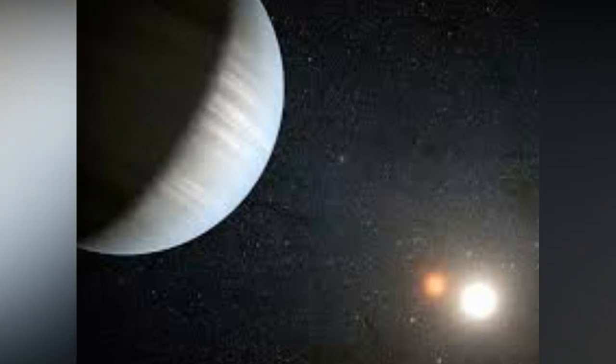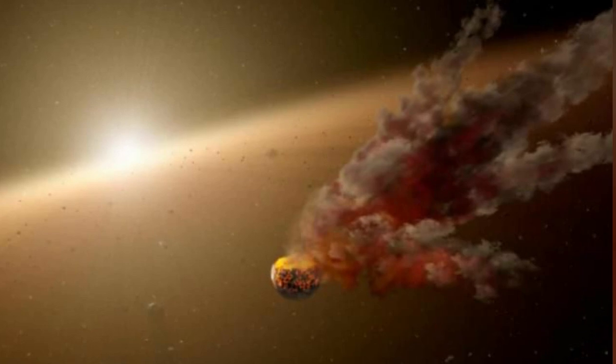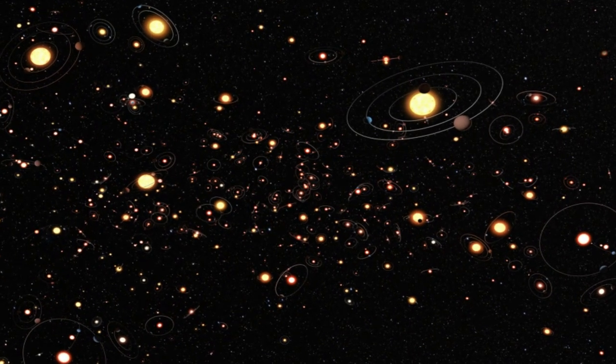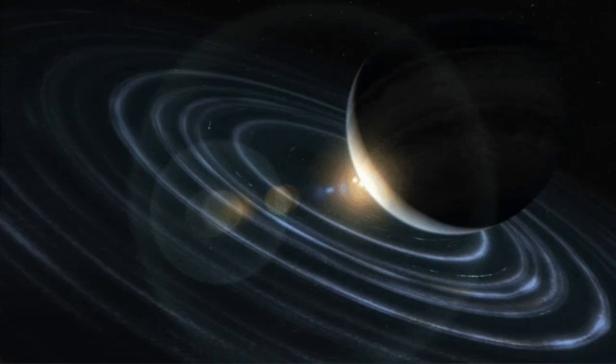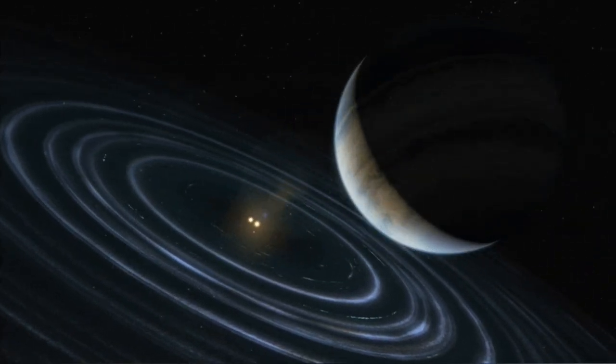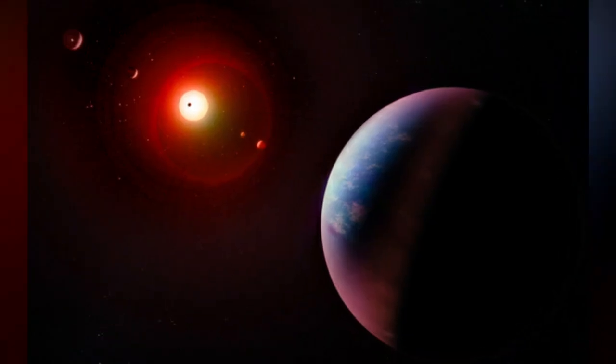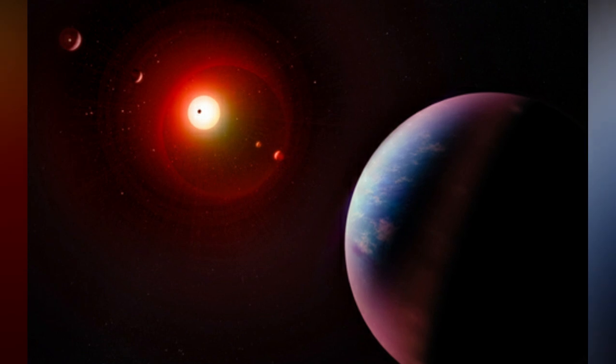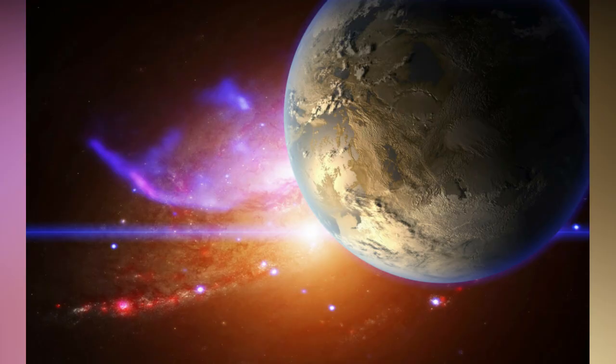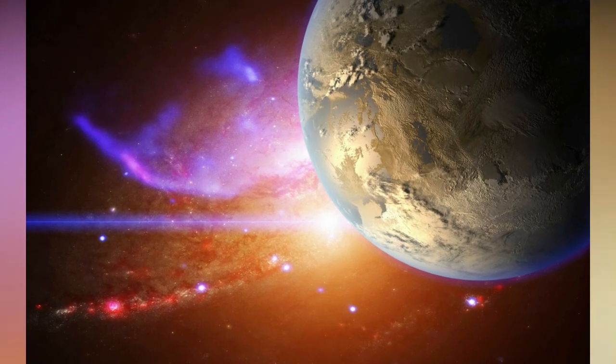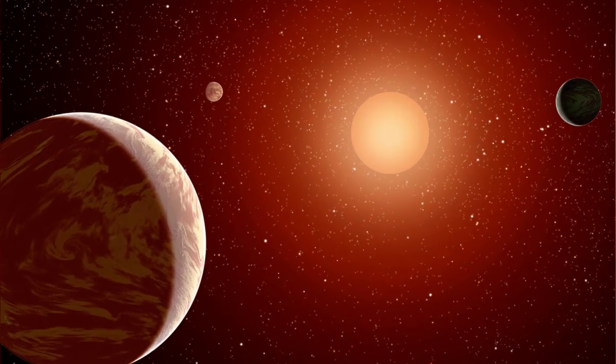In most cases any dip in star brightness can be attributed to some kind of natural phenomenon. But what if all possibilities are accounted for and only one scenario is left? What if that scenario is, this object appears to be artificial? In other words, what if it's alien? At first glance, it seems we may be at this incredible juncture. And a new finding describing this phenomenon points out that this star is unique, we've seen nothing like it.